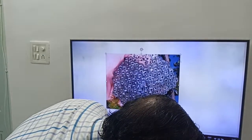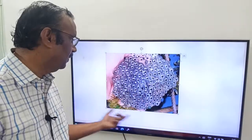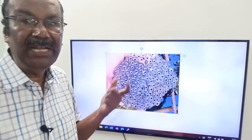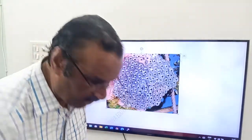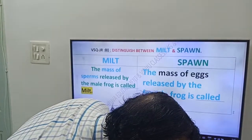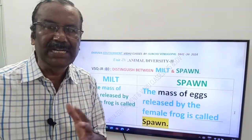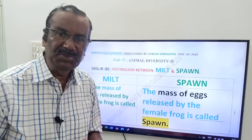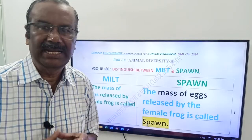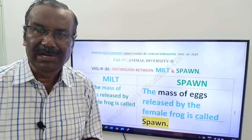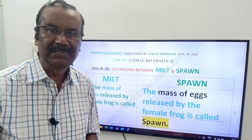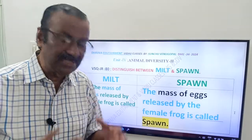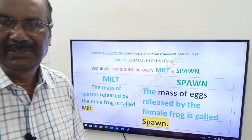I have given one image here. This is Spawn — the mass of eggs released by the female frog. To distinguish: the mass of sperms released by the male frog is called Milt; the mass of eggs released by the female frog is called Spawn. Thank you, good day.